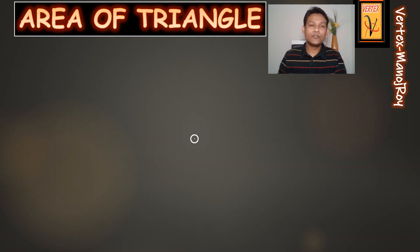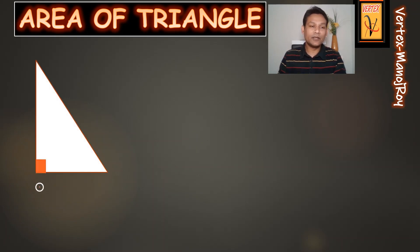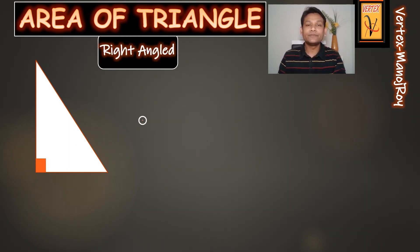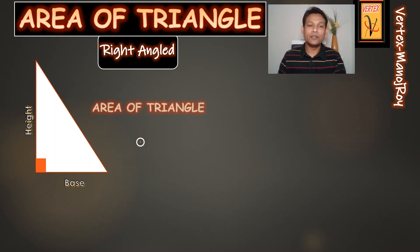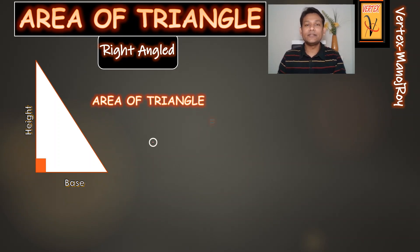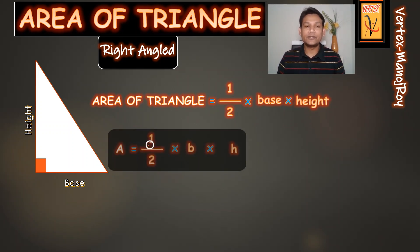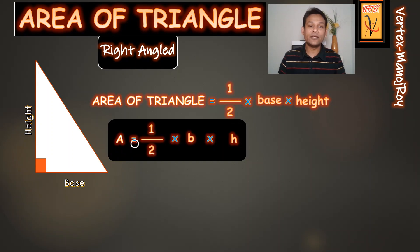Moving to the first one: when we have this triangle with a square box symbol here, it means this angle is 90 degrees, which makes it a right angle triangle. In a right angle triangle, when the base and the height are both given, we use the formula: area of triangle = ½ × base × height. This formula is normally used as the area of a right angle triangle = ½ × base × height.